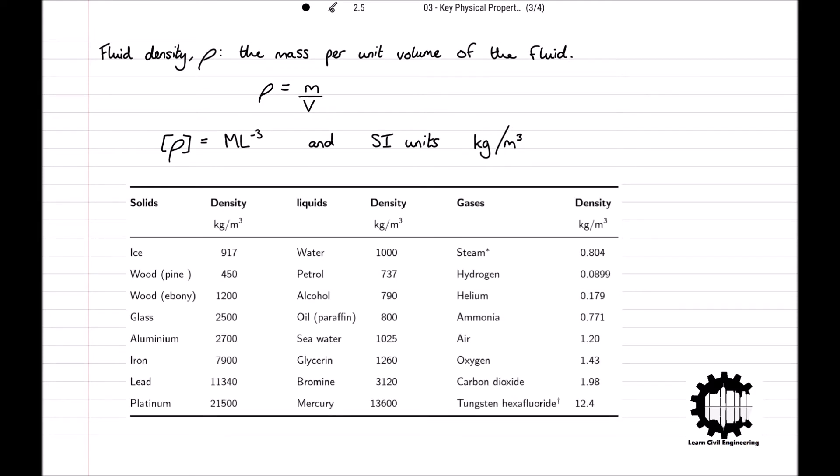Here is a table showing typical values of density for some common substances for solids, liquids, and gases. The data shows that gases are considerably less dense than liquids and solids, which are of comparable density. This is because gas molecules are spaced more widely compared to solid and liquid molecules.